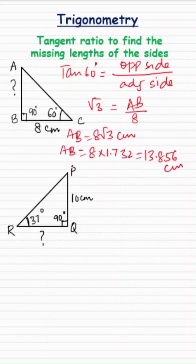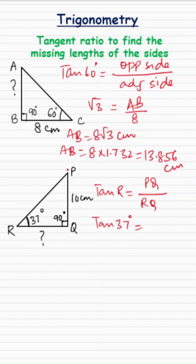So with respect to angle R, tan of R equals the ratio of the opposite side to the adjacent side. The opposite side for angle R is PQ, and the adjacent side is RQ. So tan 37° equals PQ, which gives me 10, and RQ is missing. From this equation, RQ comes out to be 10 divided by tan 37°.